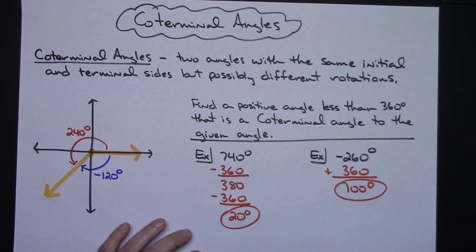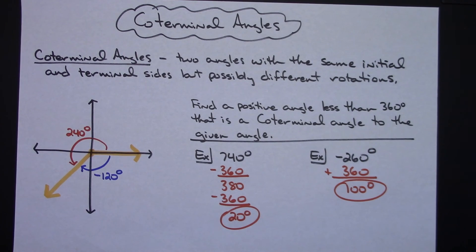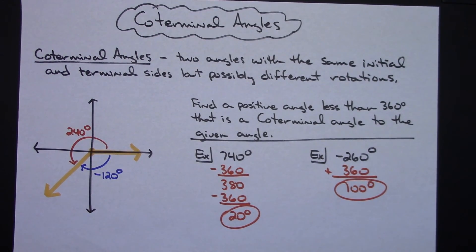So just a couple examples of what coterminal angles are by definition and then how you can go about finding them. Definitely thanks for watching and don't forget to subscribe to the channel. Thanks!